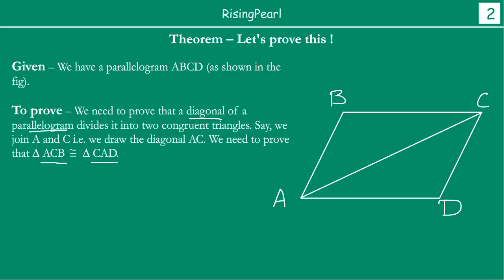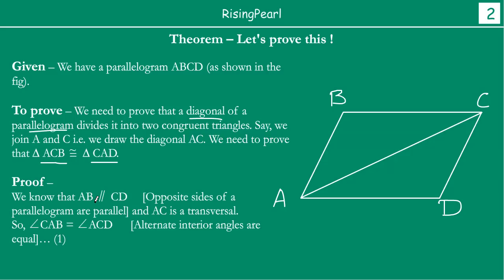We know that AB is parallel to CD. Why? Because this is a parallelogram, and opposite sides of a parallelogram are parallel. And AC is a transversal. If so, then this angle should be equal to this angle. Why? Because they are alternate interior angles. AB is parallel to CD and AC is a transversal, so alternate interior angles are equal. That is our first condition.